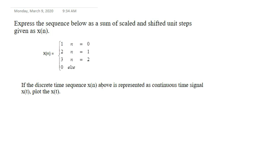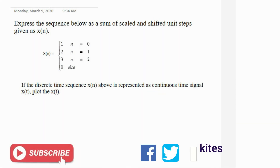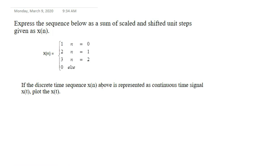This particular question has four conditions represented in terms of n, which means it is a discrete time sequence. They say if the discrete time sequence x of n above is represented as a continuous time signal x of t, plot x of t. We are going to start by performing signal decomposition.